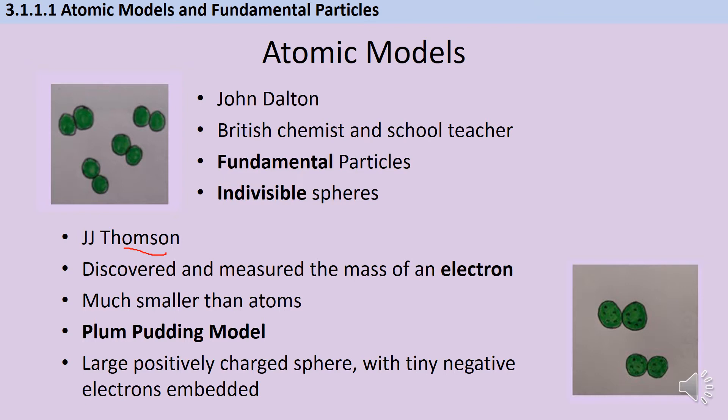So he developed what we call the plum pudding model. So a plum pudding is a bit like a Christmas pudding. If you imagine that big squashy, spongy bit, and then there are sultanas inside it, he thought that the atom was a big ball of positive charge with these little negative electrons stuck into it.